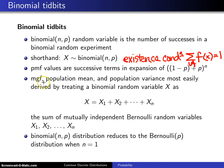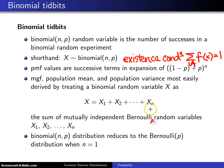Fourth point: the moment generating function, population mean, and population variance are most easily derived by treating the binomial random variable X as the sum of a bunch of mutually independent Bernoulli random variables, each with parameter P. That turns out to be nice for doing the derivations, but unfortunately we have not yet defined mutual independence, so we're going to be doing all of these the hard way in the slides coming up.